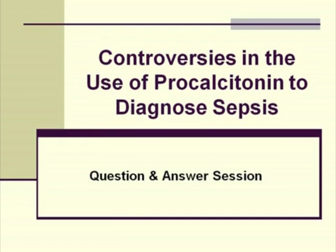That's a great question, and I get that question quite a lot. What we use at Stanford is 0.5 as a cutoff. If it's less than 0.5, we simply report the result, and it's not flagged as abnormal because the reference range is shown as less than 0.5.